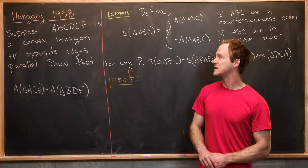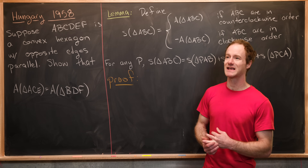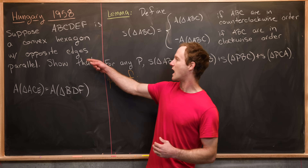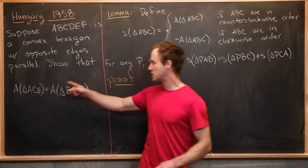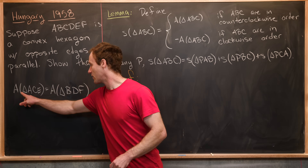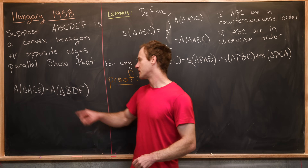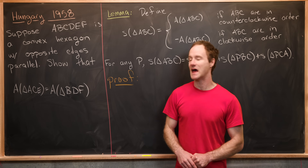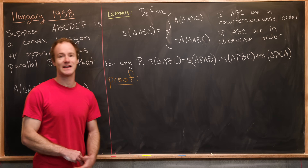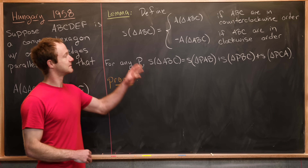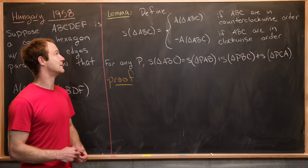We want to suppose that ABCDEF is a convex hexagon where the opposite edges are parallel, and then we want to show that the area of triangle ACE is equal to the area of triangle BDF. We're going to use the notion of signed area in order to prove this, and I've summarized what we need in this lemma.